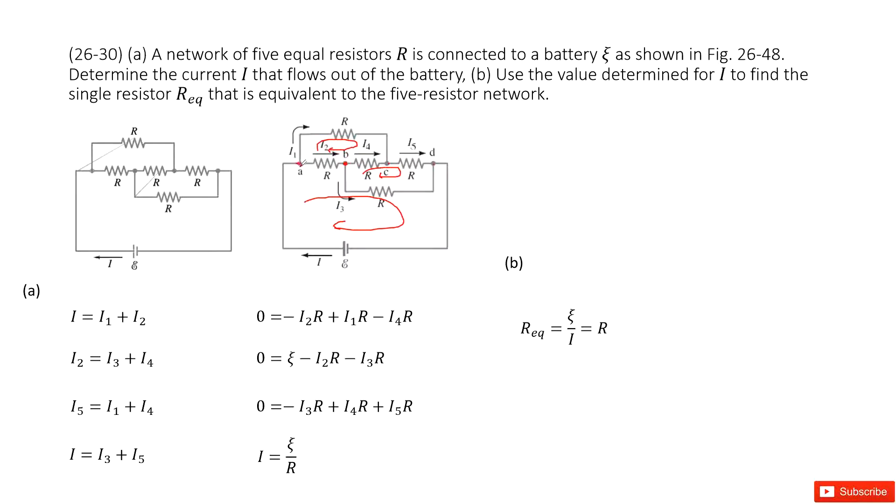You can see the potential from A to C equals. So that means the potential for this one is I1 times R should equal to the potential. So I2 times R plus I4 times R. Agree? So just this one, Kirchhoff's first loop.